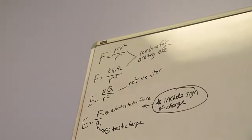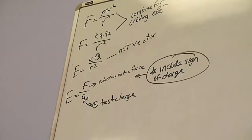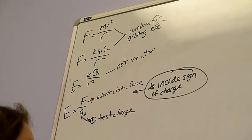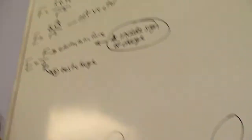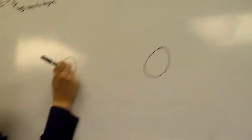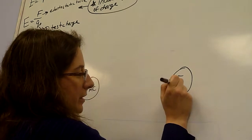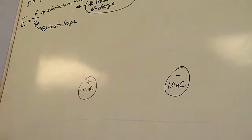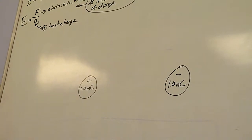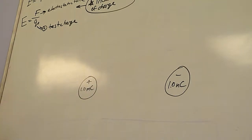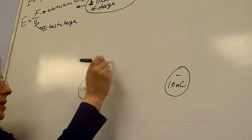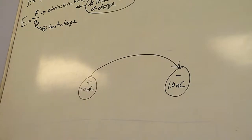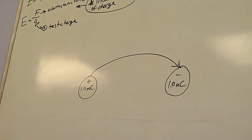Can somebody tell me — if I want to draw an electric field between a 1.0 millicoulomb positive and a 1.0 millicoulomb negative charge, how would I go about that? There are three rules of drawing electric fields. What are they? The arrows point out of positive charges and they point in to negative charges. So my arrows will come from positive and go to negative. Same charge equals same number of arrows.